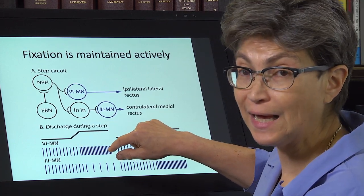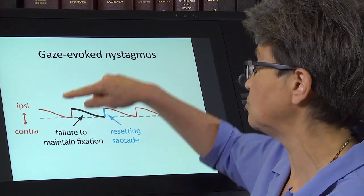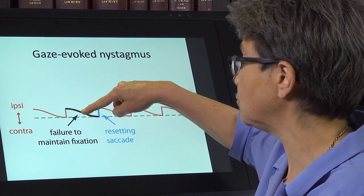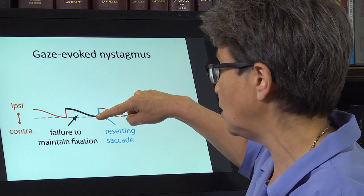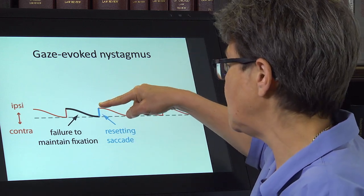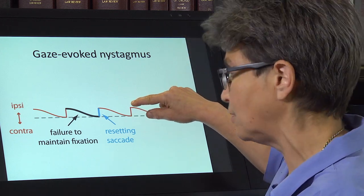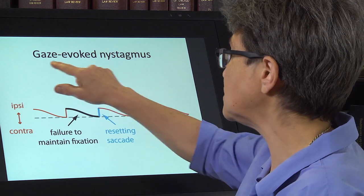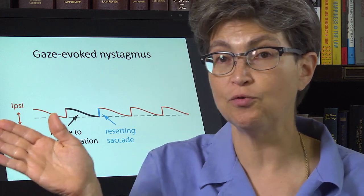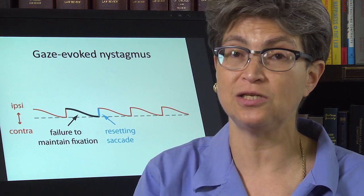Then you make a saccade again because you know that's where you're trying to look. So this is what it looks like: there's a saccade to a location, a failure to maintain fixation, a slow relaxation back to the neutral position, then a resetting saccade. And then there's the slow relaxation back to the neutral position and another resetting saccade.